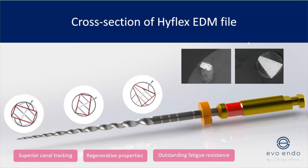HyFlex EDM has also been shown to have excellent fracture and fatigue resistance. Files fail through two mechanisms: cyclical fatigue — where you overuse the file and it's constantly being stressed — and torsional failure — where the tip of the file becomes locked within the root canal system because you're applying too much force and the file continues to spin. That is when you get file separation.